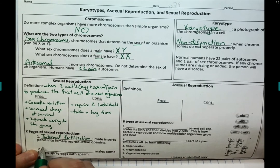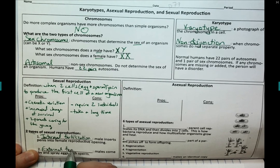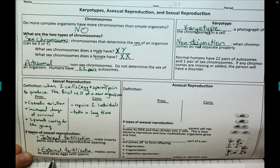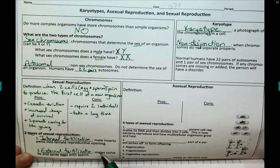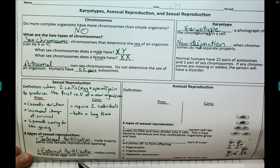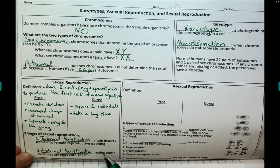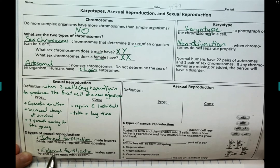The second type is external fertilization, which is the exact opposite. The male comes by and sprays the eggs with sperm. This would be organisms like frogs or fish, where the female lays her eggs in the water and then the male swims by and fertilizes the eggs with his sperm. But it's happening outside the female body — in the water or in the environment.